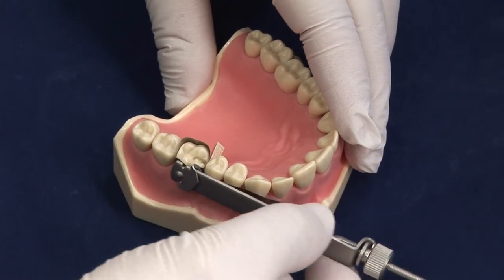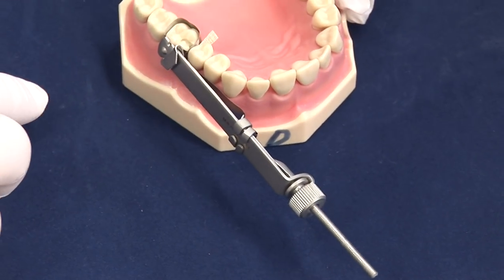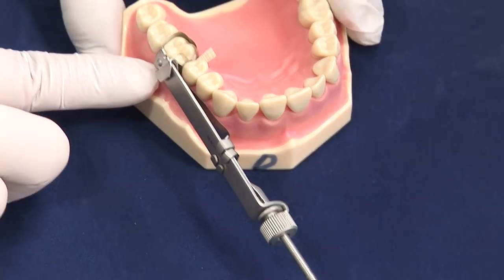The matrix retainer should be facing out of the mouth. The latch should still be in the gingival slot.